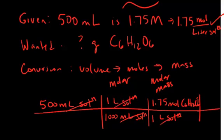Now I'm in units of moles of glucose. I just need to get to mass, and looking up on the periodic table, I figured out that the molar mass of glucose is 180 grams per 1 mole of glucose. 180 grams of glucose per 1 mole of glucose.